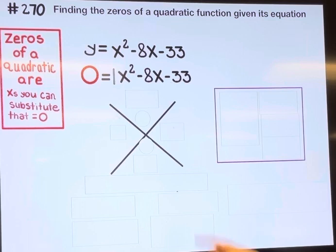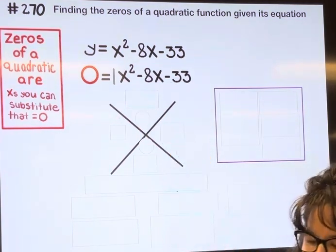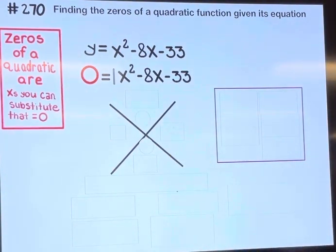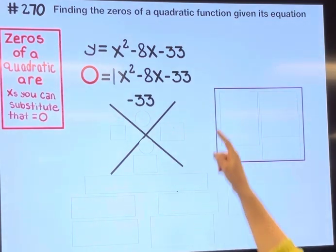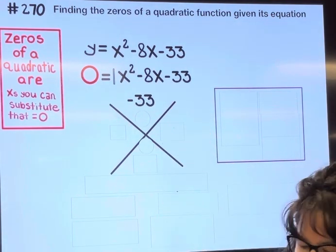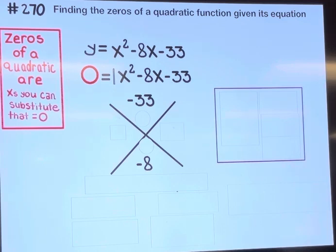1 multiplied by negative 33 is negative 33, so that goes up top, and then negative 8 in the middle, we're just gonna push that straight down. Thinking of two numbers that multiply to get negative 33 and add up to negative 8.